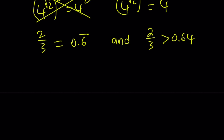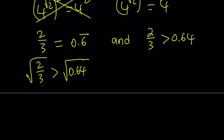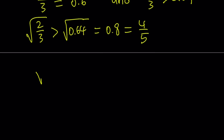Notice that 0.64 is a perfect square, so I'm going to square root that. If you square root both sides, you get: the square root of 2 thirds is greater than the square root of 0.64, because it's an increasing function. But the square root of 0.64 is 0.8, which can also be written as 4 fifths. So now I know that square root of 2 thirds is greater than 4 fifths.